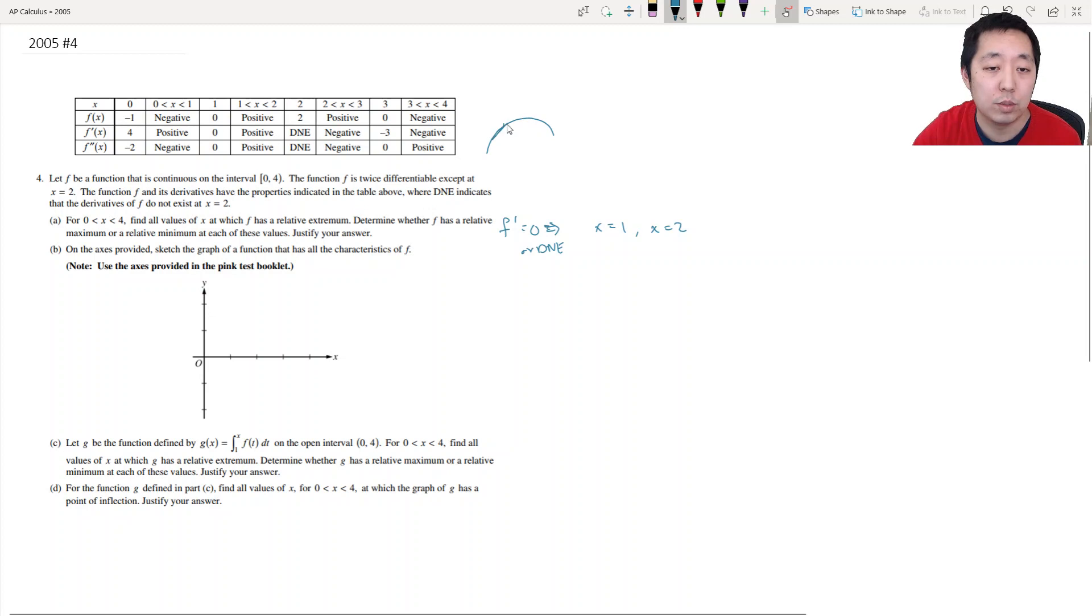So maximums occur when the slope changes from positive to negative. And minimums occur when the slope changes from negative to positive. Negative slope, positive slope. So here was no sign change. So x equals 1 is not an extrema. And here went from positive to negative. So positive to negative is a maximum. So x equals 2 is a relative max. There's no relative min.